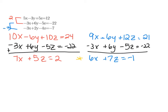Now I have two equations — just like the system of equations problems we worked on earlier this chapter or back in Algebra 1. I'm going to rewrite them together so we can see them: 7X plus 5Z equals 2, and 6X plus 7Z equals negative 1. I need to eliminate another variable to solve for the remaining one. I'm going to have to multiply by fairly large numbers — I'm not going to use substitution here.